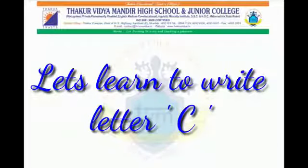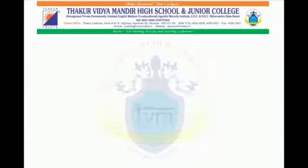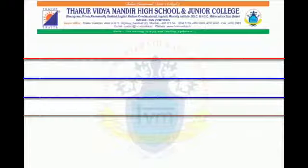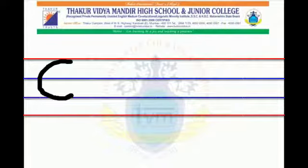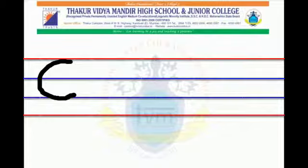Let us learn to write Letter C. To write Letter C, start from the red line, draw a curve from the red line touching to the second blue line. Let us write one more time: start from the red line, draw a curve from the red line touching to the second blue line.